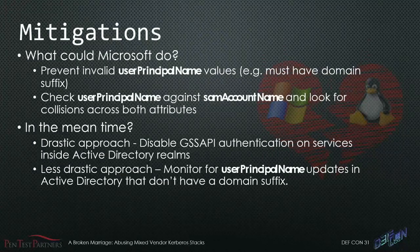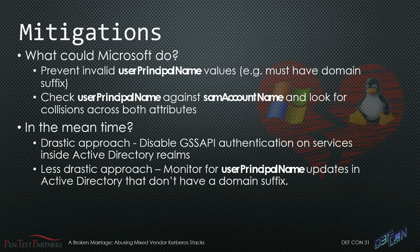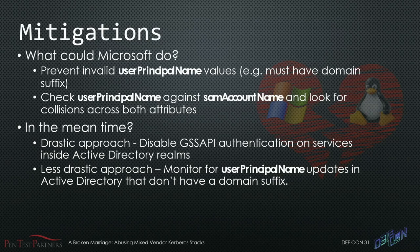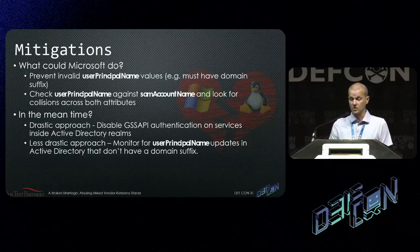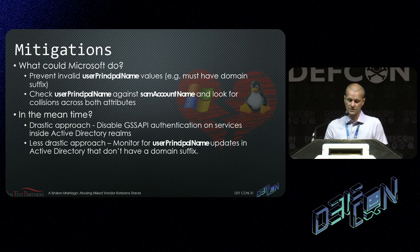So what mitigations are there? Microsoft themselves could harden the user principal name by ensuring they all have a domain suffix, or additionally cross-check the user principal name against the SAM account name to make sure there are no collisions. In the meantime, for defenders: consider disabling GSS API-based authentication for hosts joined to an Active Directory realm, or — the less drastic approach — monitor for user principal name updates that don't conform to a valid UPN and investigate those anomalies.